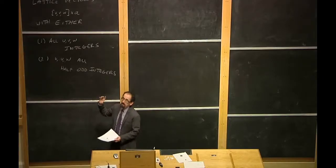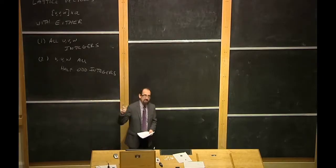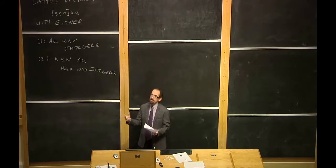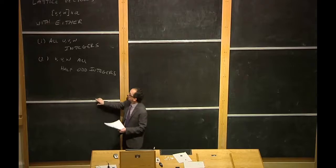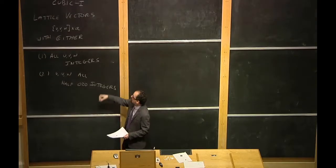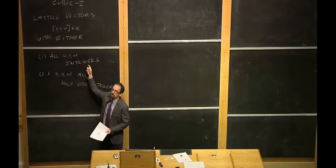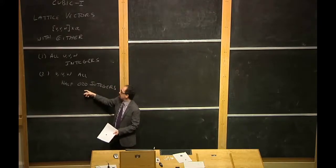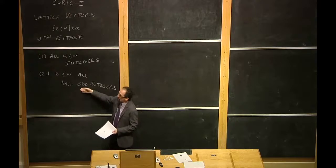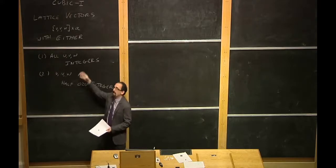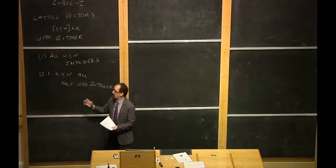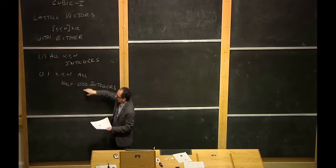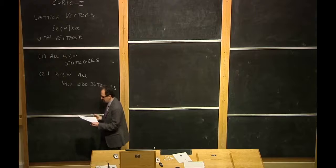We should check one of our definitions of a lattice: we should be able to add any two lattice vectors together and get another lattice vector — it should be a closed set under addition. If we add integers to integers, we get back integers. Integers plus half-odd integers gives half-odd integers. Half-odd integers plus half-odd integers gives back integers. So it works either way — that makes this a lattice.